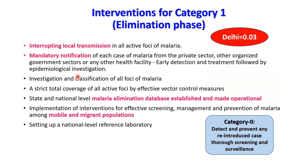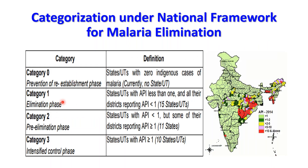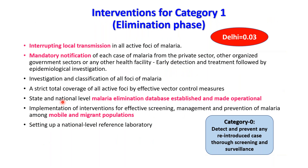Interventions for Category 1 states in the elimination phase include interrupting local transmission, mandatory notification of each malaria case from private and other sectors, investigation and classification of each malaria case, strict total coverage of all active foci by effective control measures, establishment of a state and national level malaria elimination database, and setting up of national level reference laboratories.